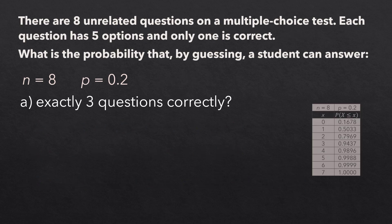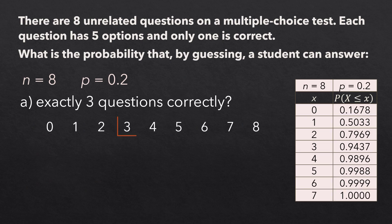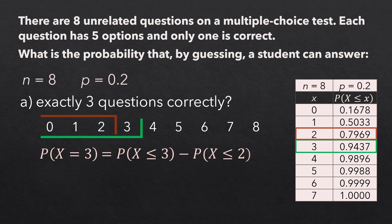To use the cumulative binomial table, we need to isolate 3 by taking the cumulative probability up to 3, and removing cumulative up to 2, which is denoted as you see here. So, we take 0.9437 and subtract 0.7969, and that gives the same 0.1468 we obtained using the formula.